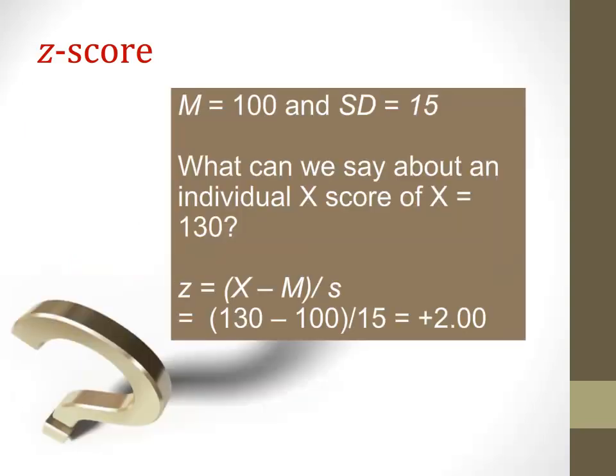Let's look at z-scores more practically with an example. Consider a normally distributed sample of educational statistics final exam scores with a mean of 100 and a standard deviation of 15. What can we say about an individual who scores 130? To calculate the z-score: z equals (130 minus 100) divided by 15, which gives a z-score of plus 2. The score of 130 is two standard deviations above the mean.